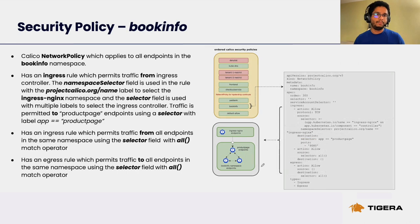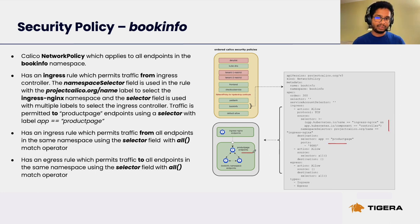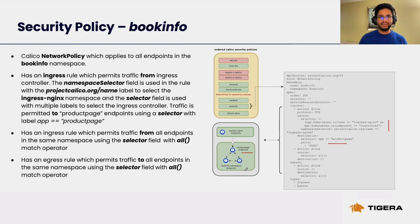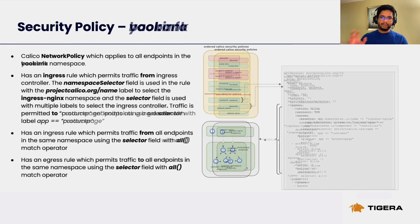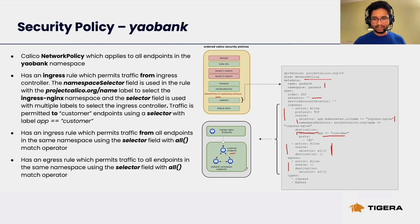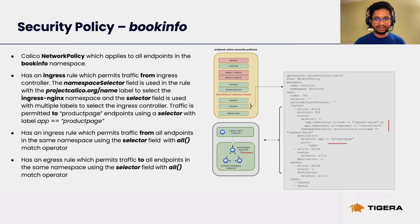The Bookinfo policy follows a very similar pattern to Yaobank. Traffic from the ingress is permitted, this time to the product page deployment which is exposed to external consumers, and all communications to and from all endpoints inside the namespace are allowed. The key point is to understand the pattern: in the Yaobank example the customer endpoint was exposed to external consumers, and in the Bookinfo example it's the product page endpoint — those are the endpoints with the ingress pinhole permitting traffic from the ingress controller.